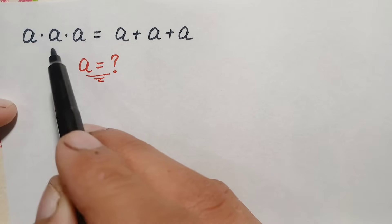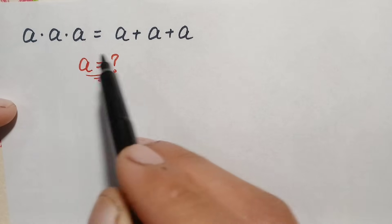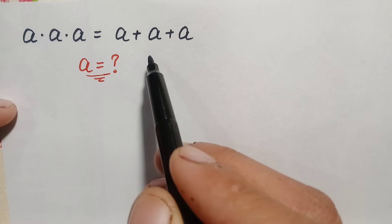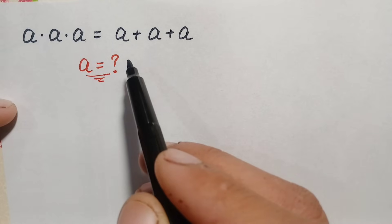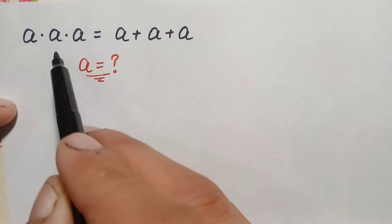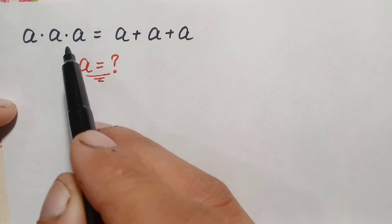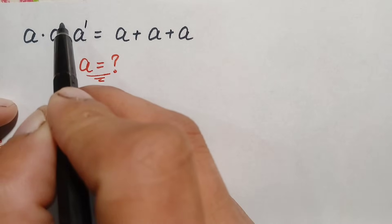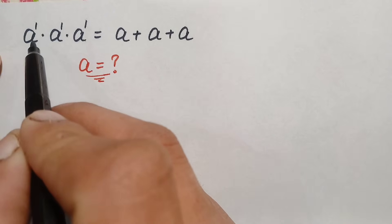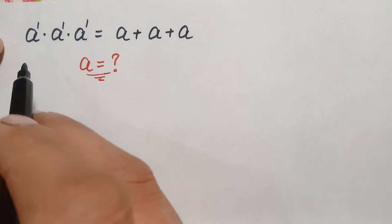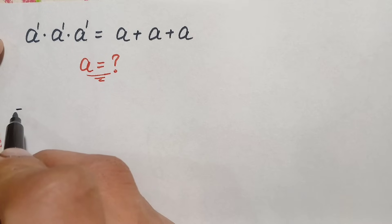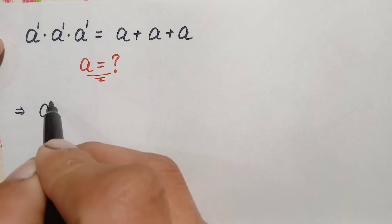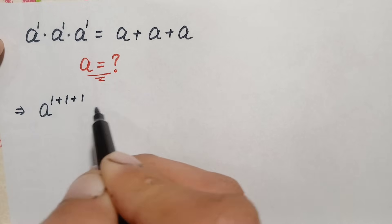On the left-hand side, the variable 'a' is multiplied three times, while on the right-hand side the same variable is added three times. Looking at the left-hand side, the base is the same, so we write the base one time and add the powers using the same-base algebraic identity. This gives us a to the power one plus one plus one.